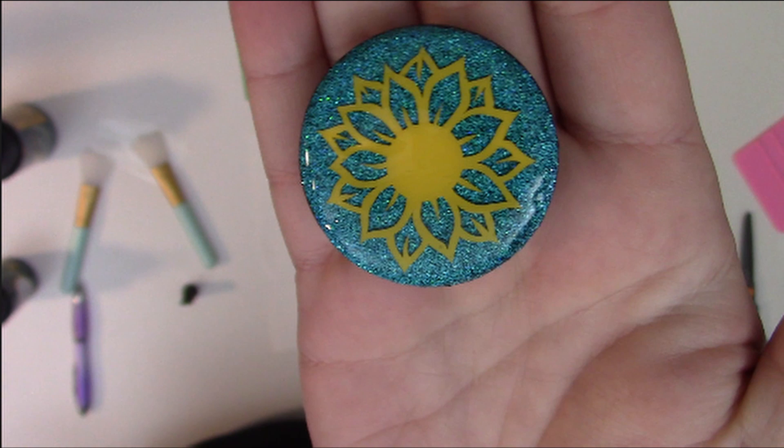Today, we're going to take the pop socket that we made in a previous video and add some vinyl to it, and I'm going to show you how simple and easy it is. We're going to use the new StarCraft HD because we're cutting this so tiny, and I find that StarCraft HD cuts really small, detailed pieces extremely well. Let's go over to design space so I can show you how to size up your design.